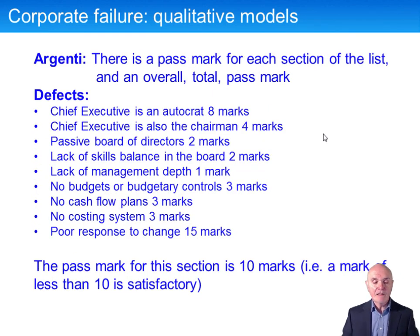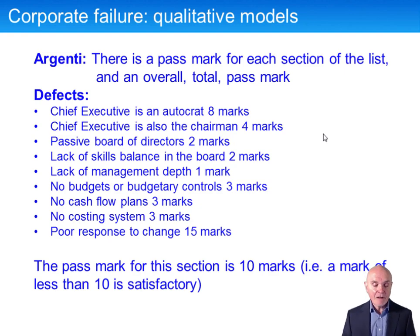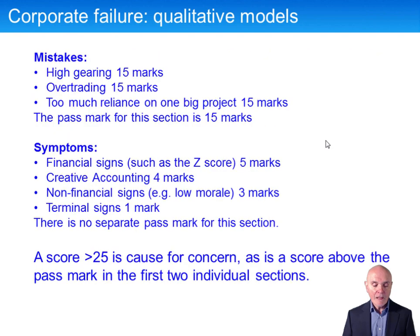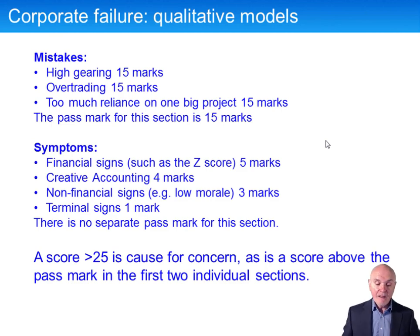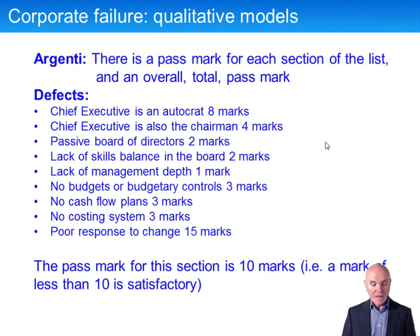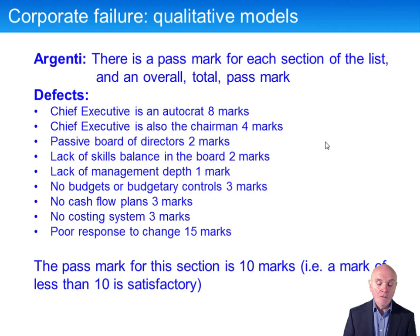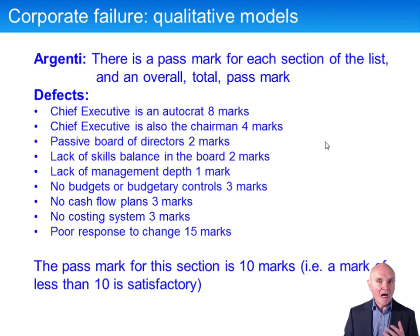The non-quantitative or qualitative method is Argenti. There are defects, mistakes, and symptoms. A high score is bad — a score over 25 is bad, as is a score above the pass mark in the first two individual sections, where the pass mark is 10. The first two defects are: the chief executive is autocratic and is also the chairman — there's no one to stop this person taking risks and pushing through risky decisions — and a passive board that does not stand up and challenge decisions, which is also bad news.